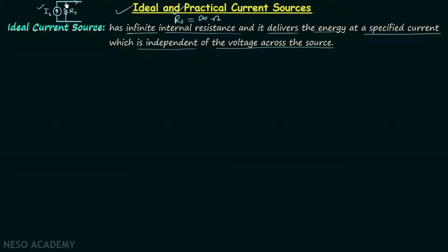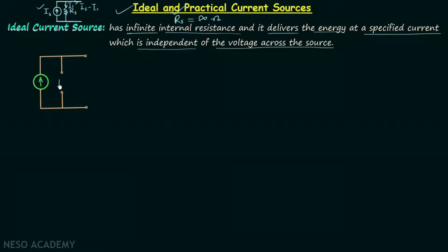For example, if IS is divided and current I1 flows through RS, then the current from this source equals IS minus I1. This is what any element connected across the terminals of the current source will receive. Now we move to the ideal current source case, where internal resistance is infinite.